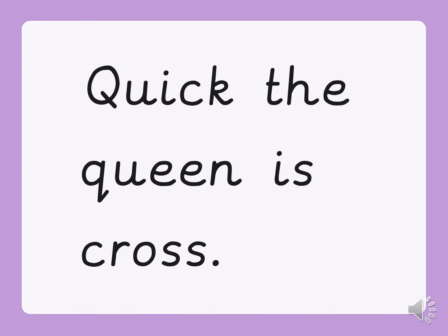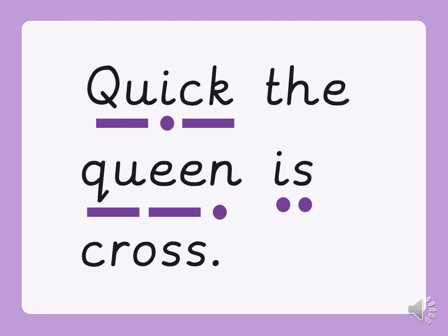Here's another sentence. Can you have a go at reading it first? Now let's read it together. There are two words this time with the diagraph qu in. Qu, i, c — quick. Now this second word is a word you should know. Quick, the queen, is cross. Let's put all those words together to make a proper sentence: Quick, the queen is cross.